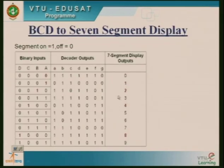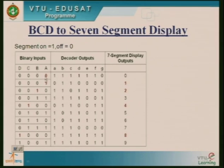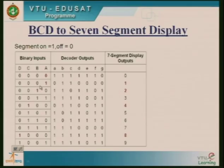From these combinations, I can generate 10 outputs using the 7-segment display. I can display numbers 0 to 9, and also characters from A to F. These are the decoder outputs connected to the decoder inputs — this is one application of a decoder.